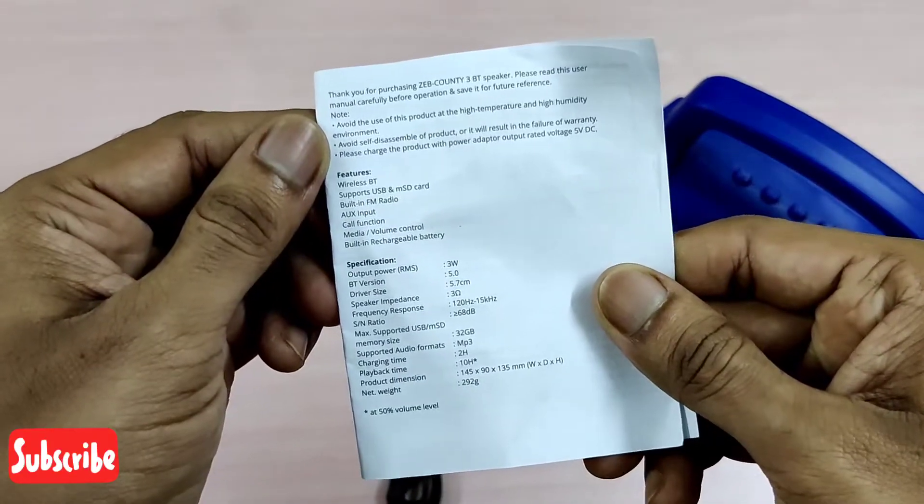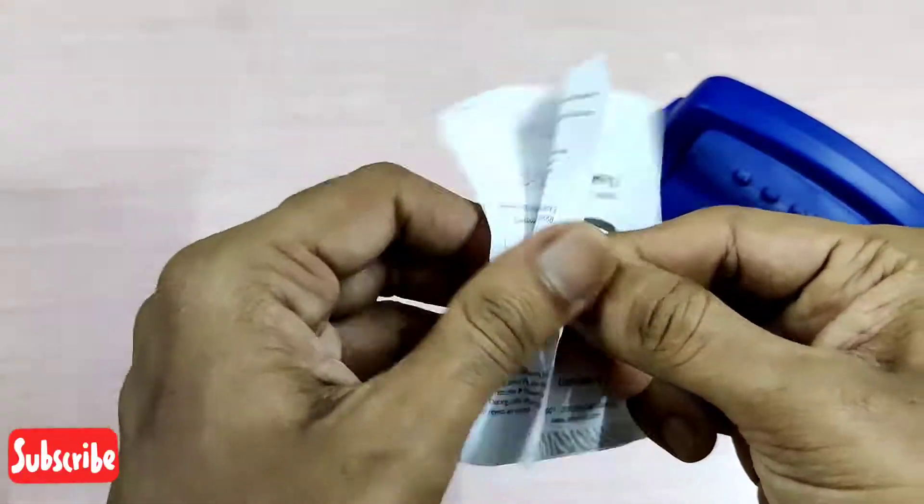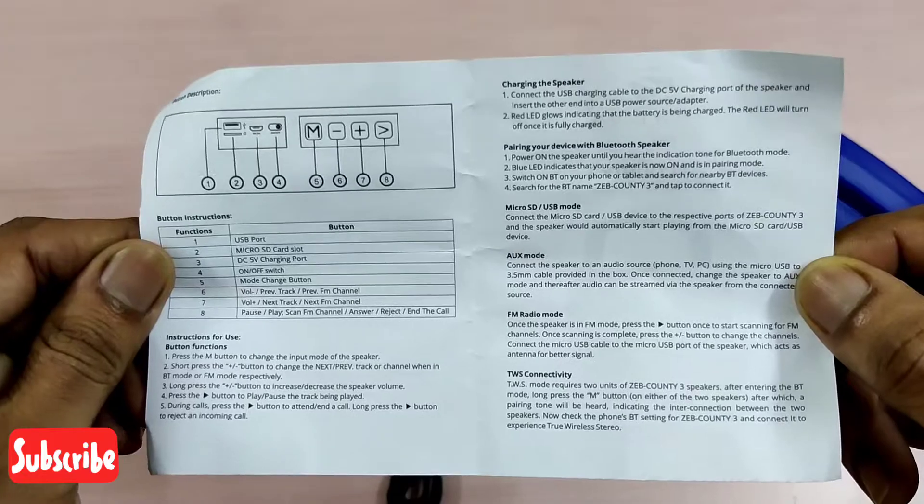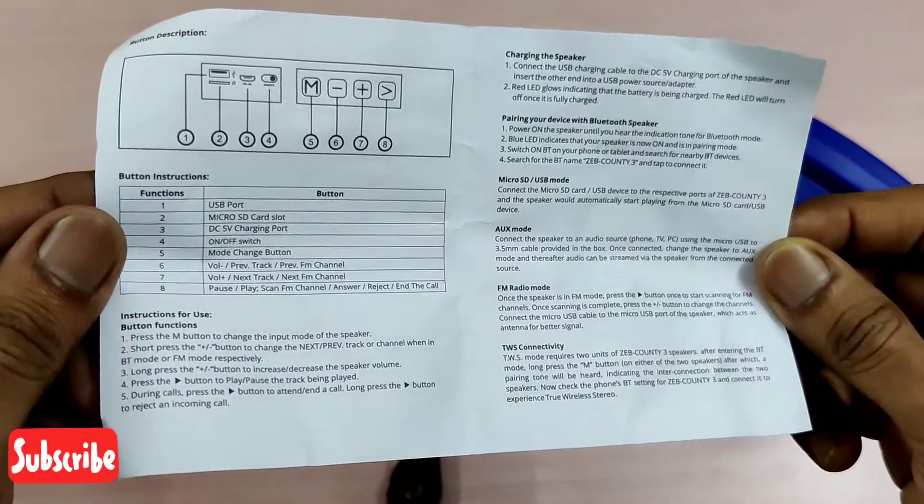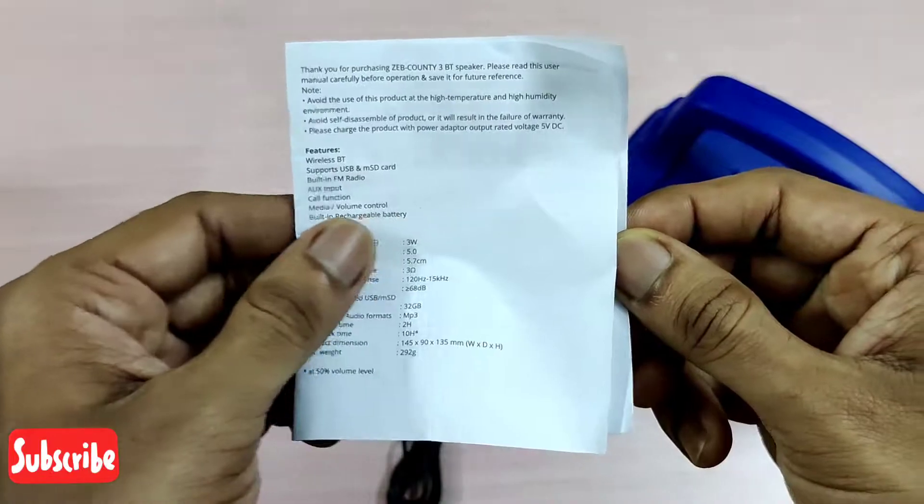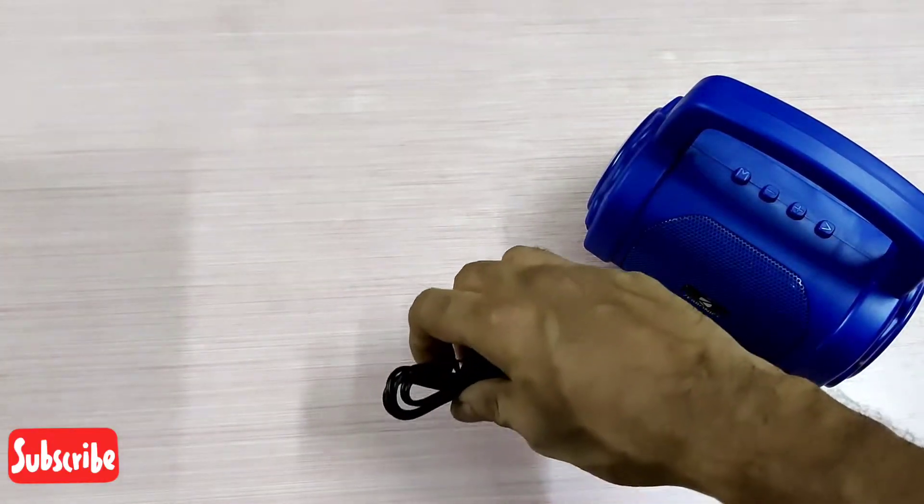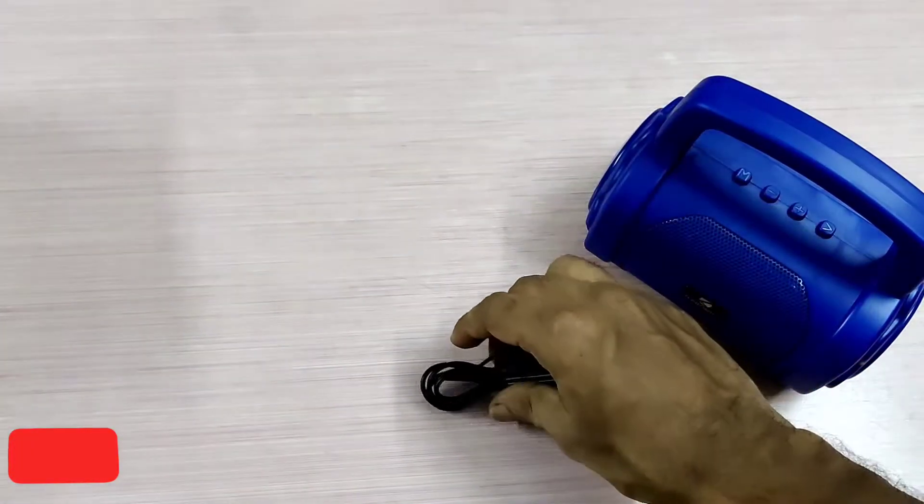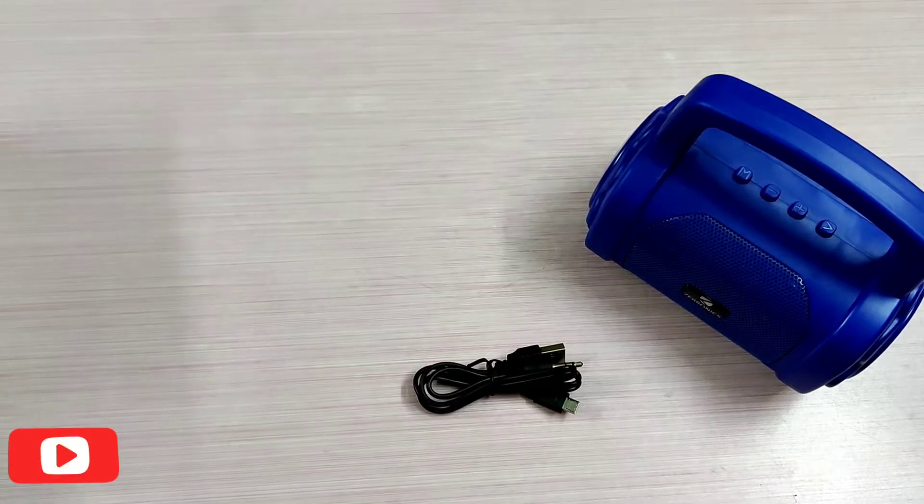So this is the user manual. They've given all information and specifications about the product and how you can use the multiple modes available like the AUX mode or the FM radio. Everything is given clearly in the user manual, so you will not have any trouble finding that details.